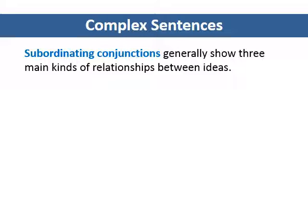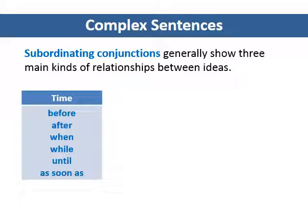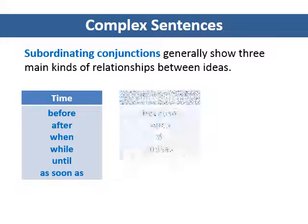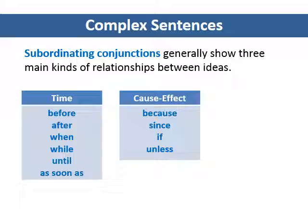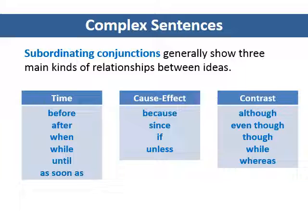Subordinating conjunctions generally show three main kinds of relationships between ideas. Many subordinating conjunctions show time relationships — examples include 'before,' 'after,' and 'when.' Other subordinating conjunctions show cause and effect relationships, such as 'because,' 'since,' 'if,' and 'unless.' Finally, we can use several subordinating conjunctions to contrast ideas, including 'although,' 'even though,' and 'while.'